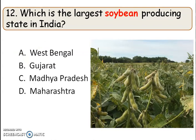The next question: which is the largest soybean producing state in India? The right answer is option C, Madhya Pradesh. Soybean is a very important vegetable protein and oil seed crop, and Madhya Pradesh is the largest soybean producing state in India.